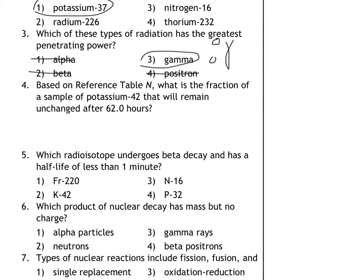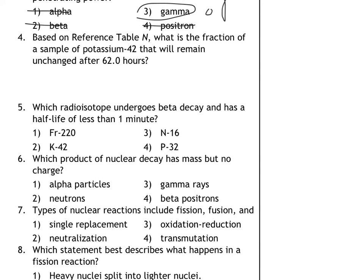Alright, we have a half-life question. I love these. Based on reference table N, what is the fraction of a sample of potassium-42 that will remain unchanged after 62 hours? So here's my general strategy. I know that it's been decaying for 62 hours and I do need to know the length of a single half-life of potassium-42 in order for me to find out how many half-lives it's actually been through.